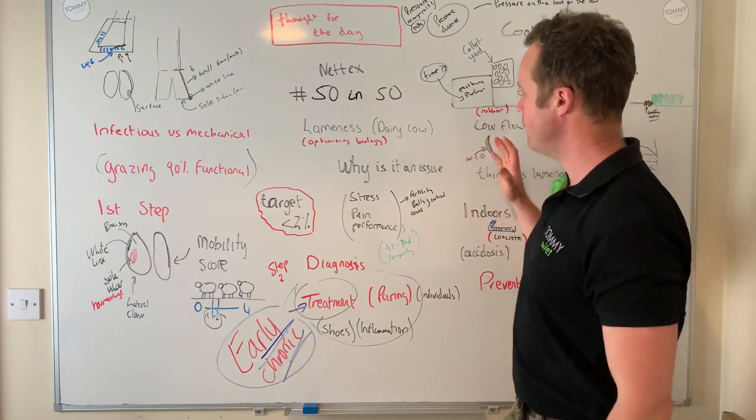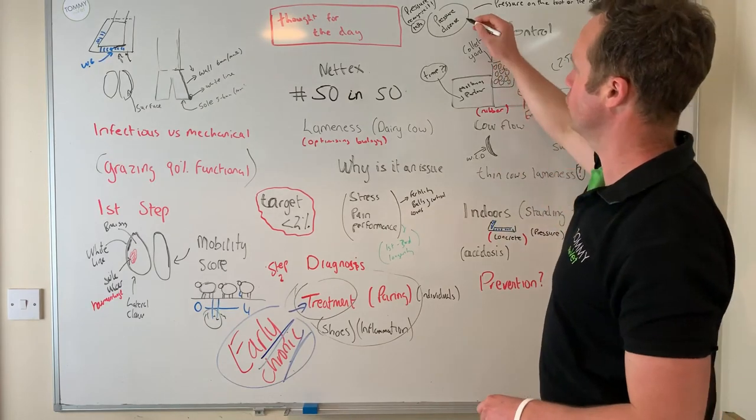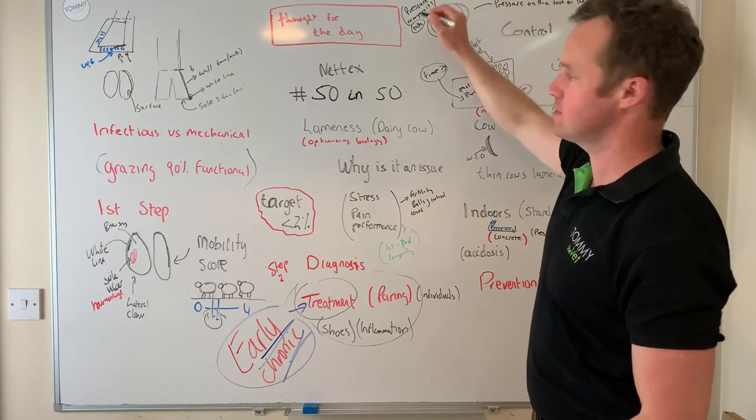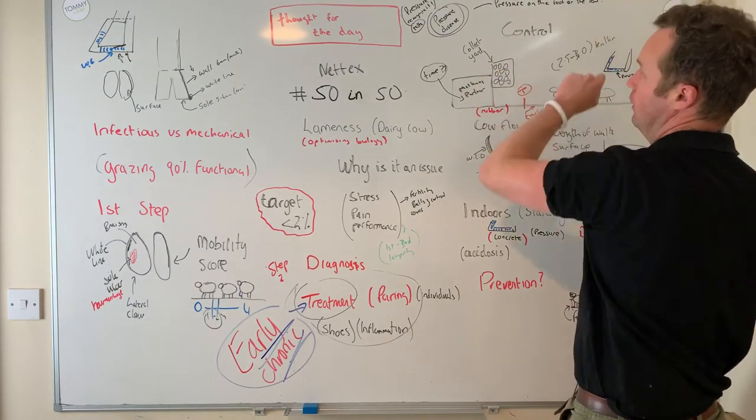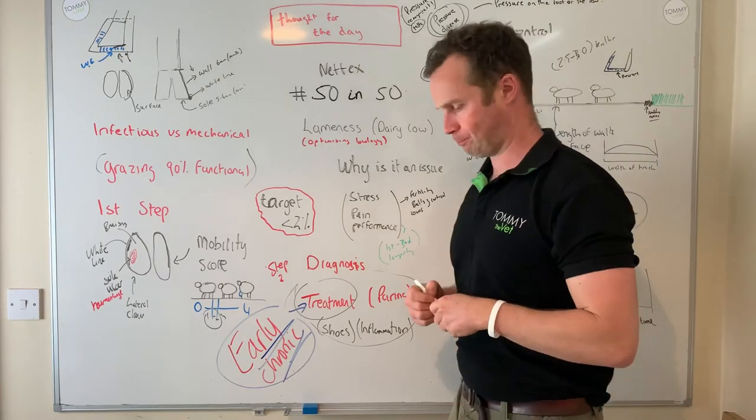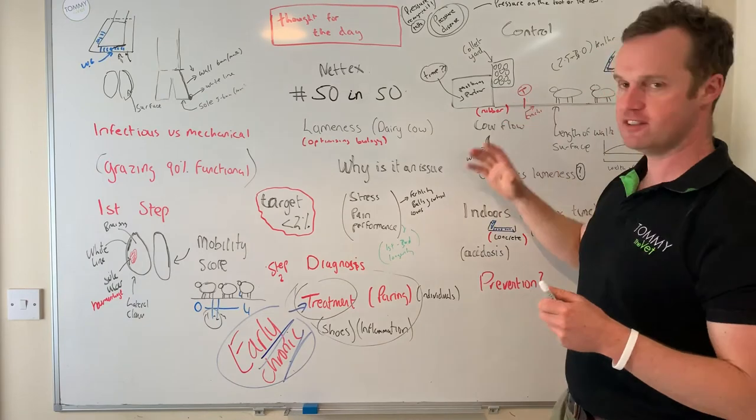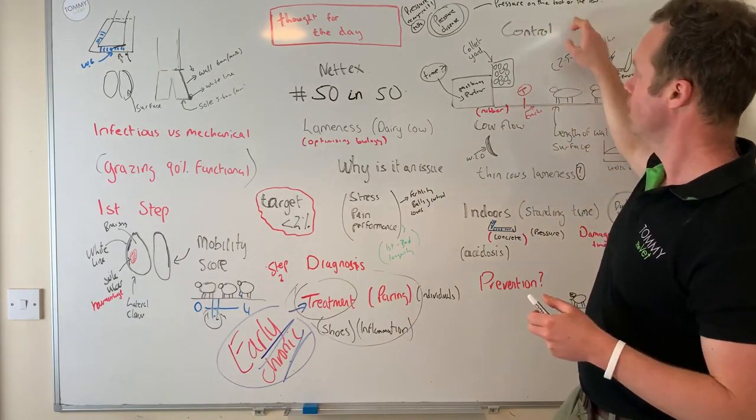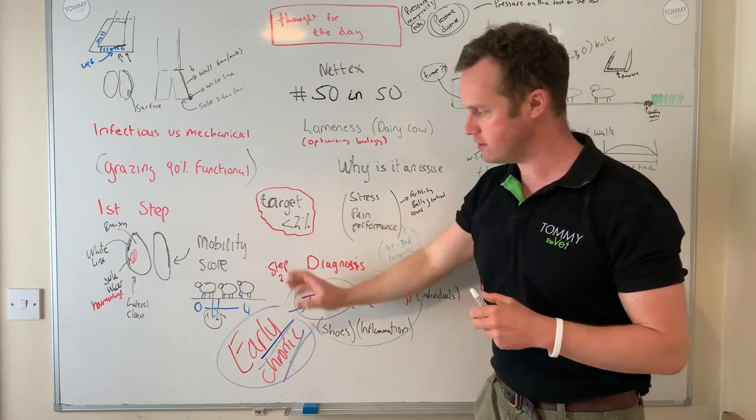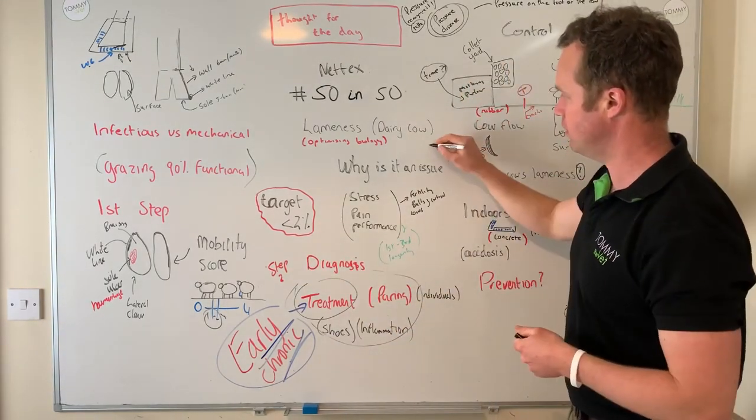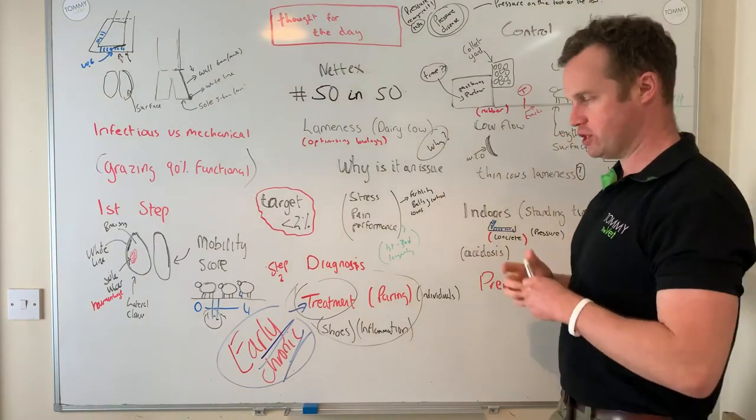Let's think about control. If we know that information, for functional lameness it's a pressure disease. It's pressure on the foot or pressure on the cow. When I heard that first from experts like Neil Chesterton, pressure is a pressure disease, pressure on the foot or pressure on the cow. How do we control it? It's reducing pressure. If we're seeing a lot of this disease, you're seeing disease that's often a manifestation of management or husbandry or nutrition that needs to change. Ask why.